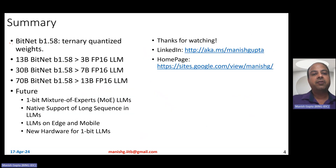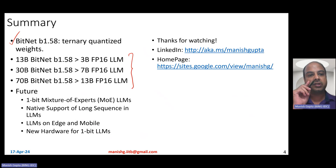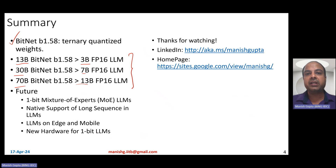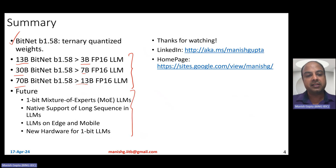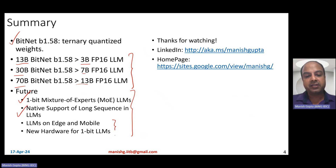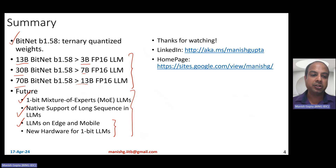In summary, BitNet B1.58 uses ternary quantized weights with 8-bit activations. In terms of memory, latency, and energy consumption, the 13 billion BitNet checkpoint is better than the 3 billion FP16, 30 billion is better than 7 billion, and 70 billion BitNet is better than 13 billion FP16 — both in memory, latency, energy, and accuracy. From a research perspective, people can explore one-bit mixture-of-experts language models and long sequence sizes. From a deployment standpoint, these models could run on edge devices and mobile phones, and industry can design new hardware to support one-bit large language models.